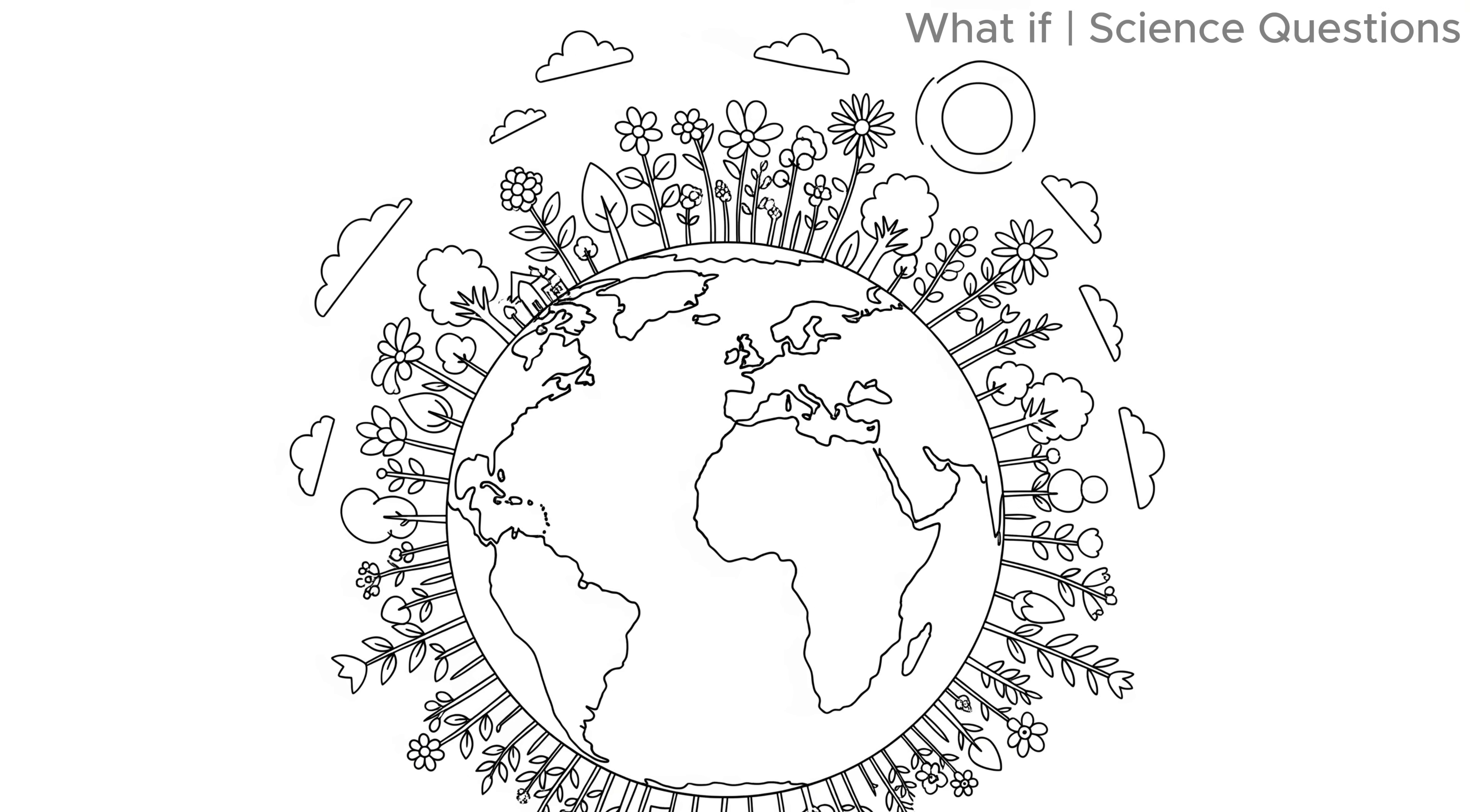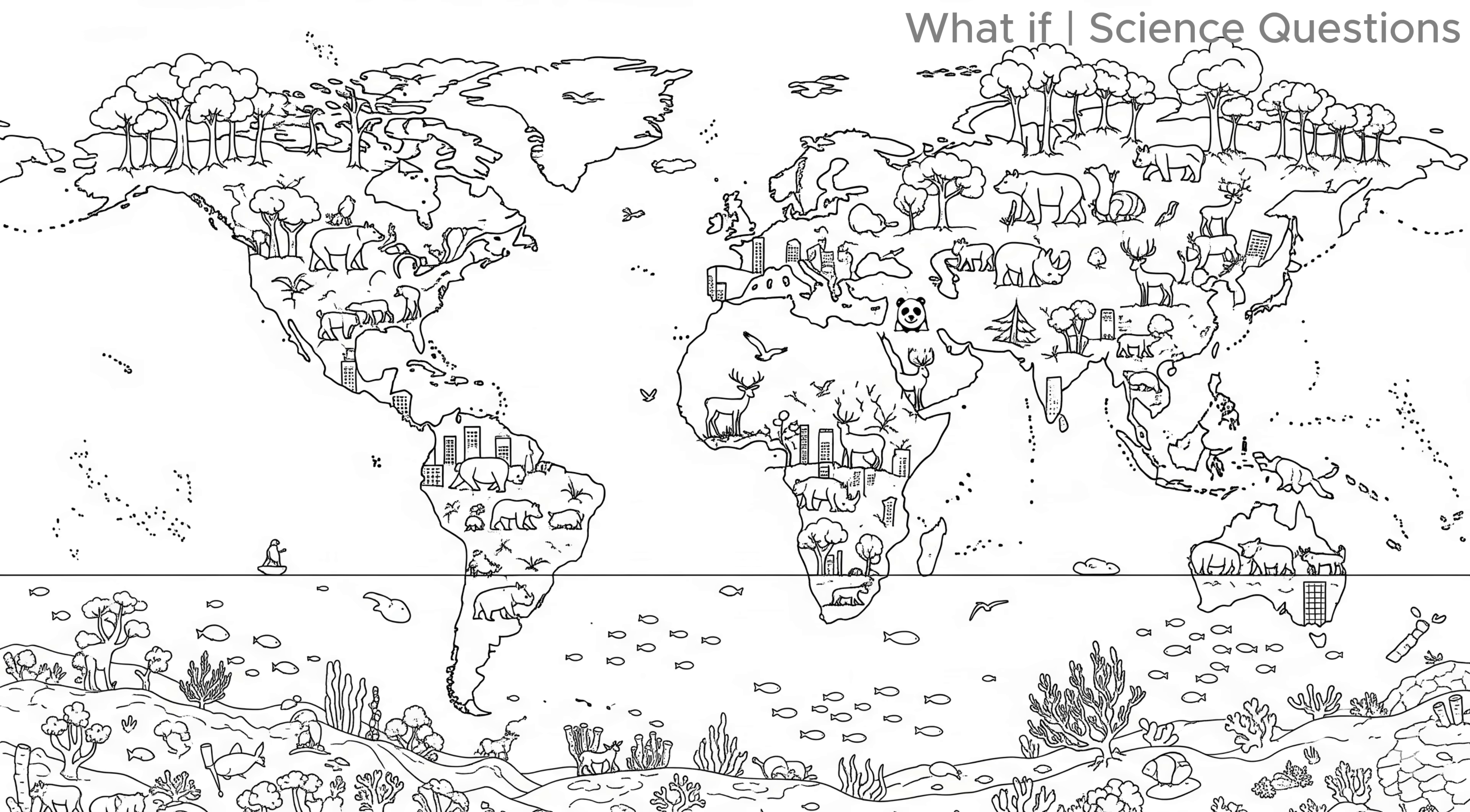But here's the strangest twist. Earth would thrive without us. Forests would regrow across continents. Animal populations would explode into abandoned cities. Coral reefs might recover without pollution. And endangered species might spread once more.